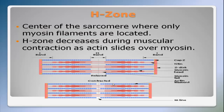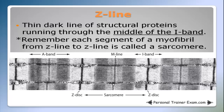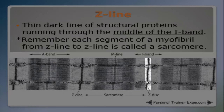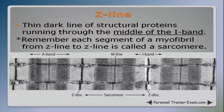Z line. The Z line is a thin dark line of structural proteins running through the middle of the I band. This dark line is the Z line. Remember, each segment of a myofibril from Z line to Z line is called a sarcomere.